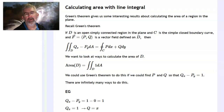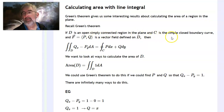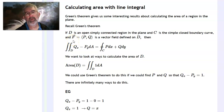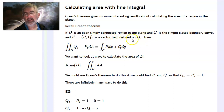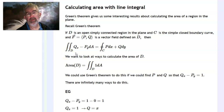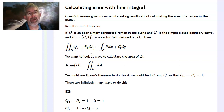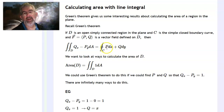Recall Green's theorem. I have a region which is open and simply connected, and its boundary curve C is a simple closed curve. I have some vector field F = (P, Q) defined on all of D, and actually on a region a little bit bigger than D, because I need it defined on C as well. Green's theorem says that the double integral over D of (∂Q/∂x − ∂P/∂y) dA equals the line integral all the way around C of P dx + Q dy — that is, F dotted with dr.